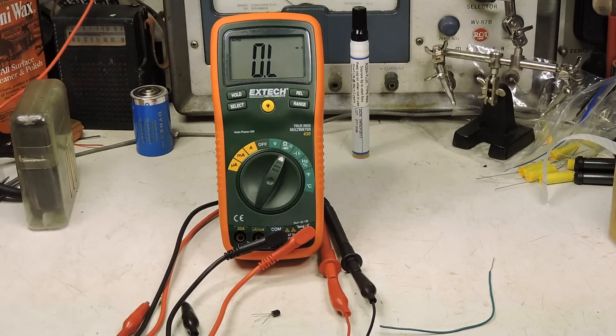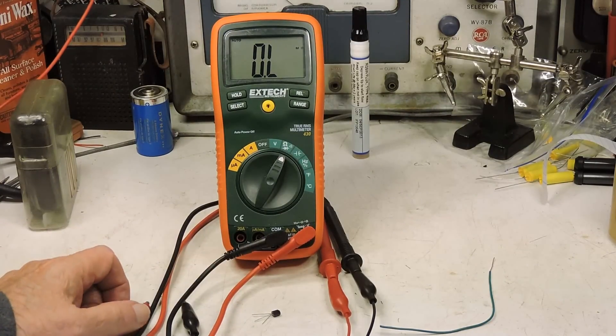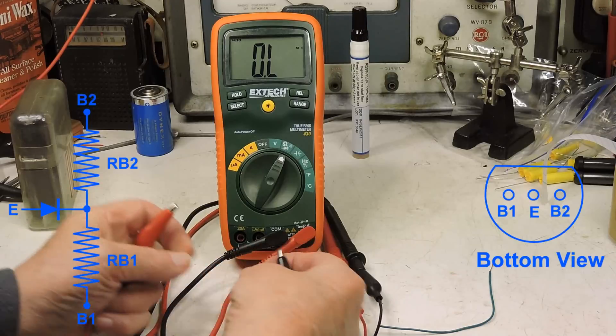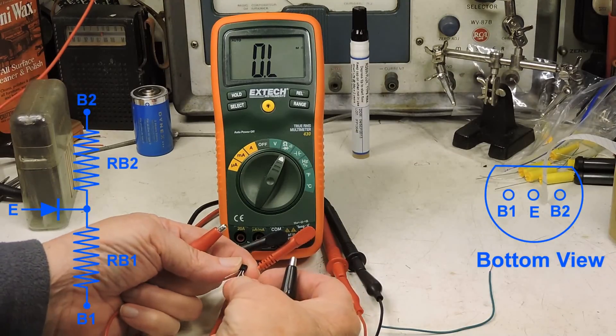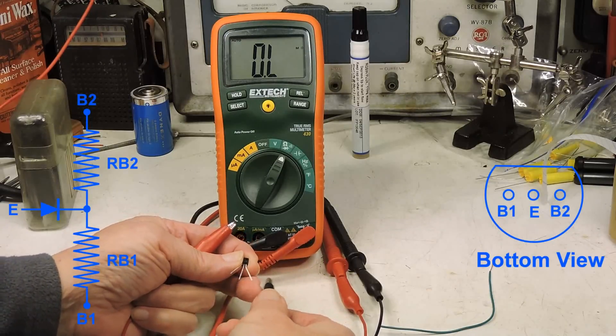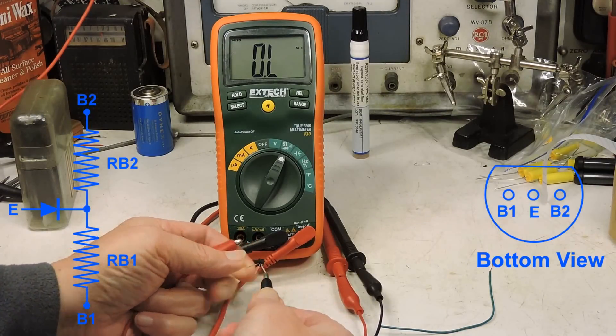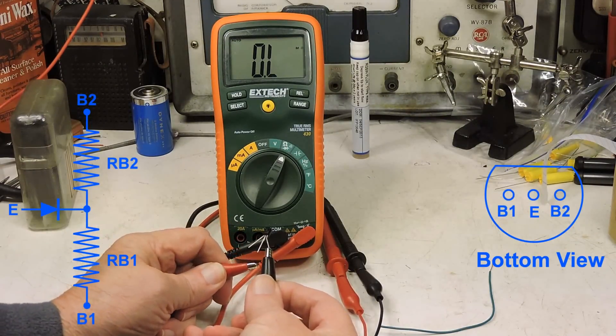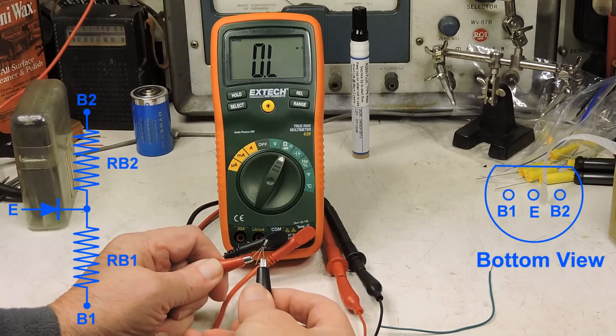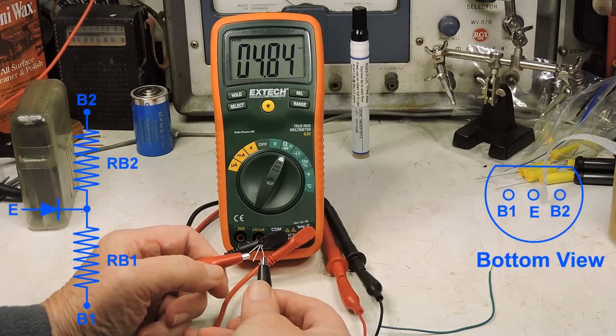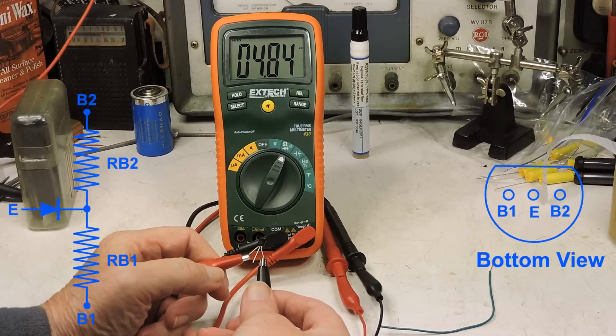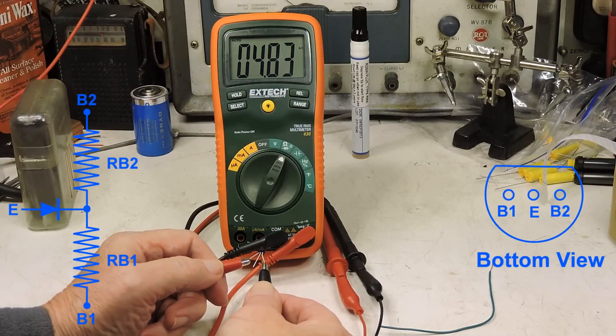This is a video using an ohmmeter to test a unijunction transistor. I've got the negative lead on B2, positive lead on B1, and we're just a little under 5,000 ohms.